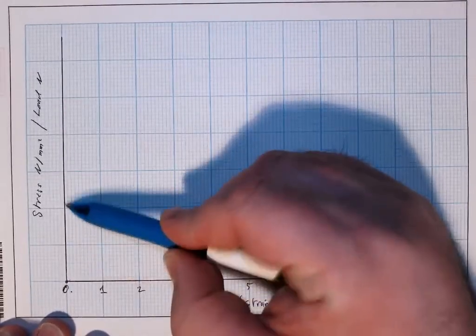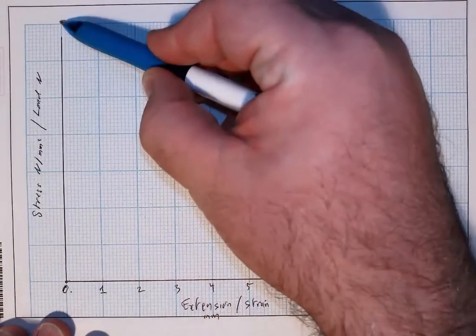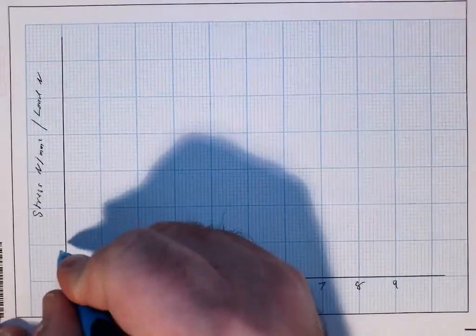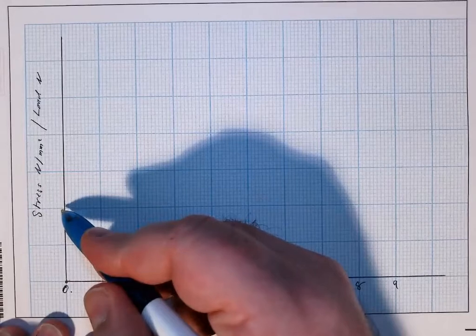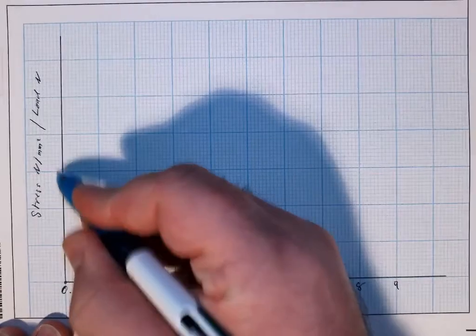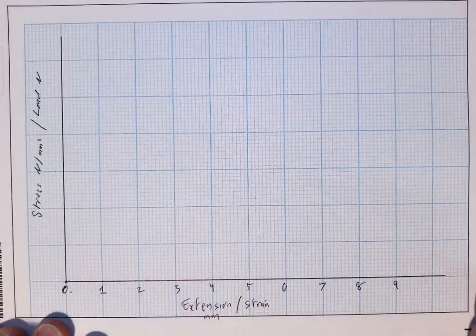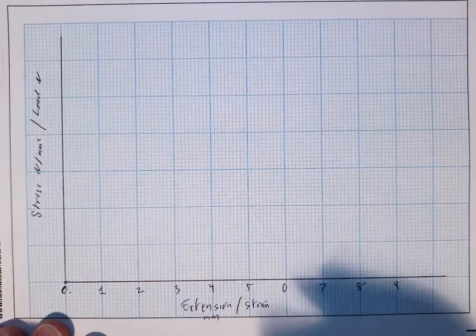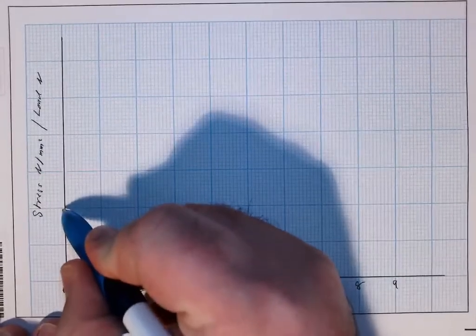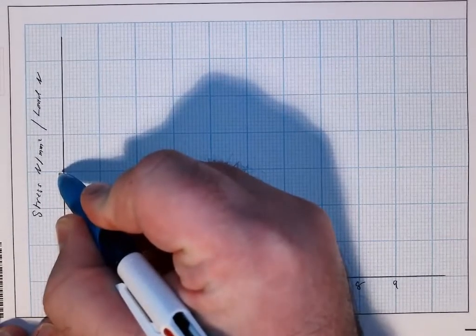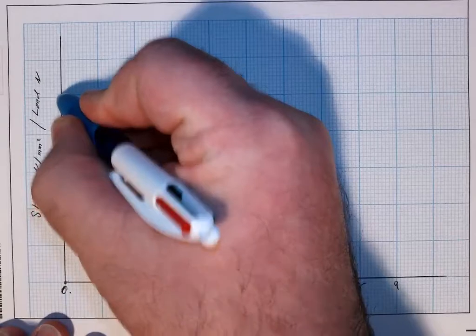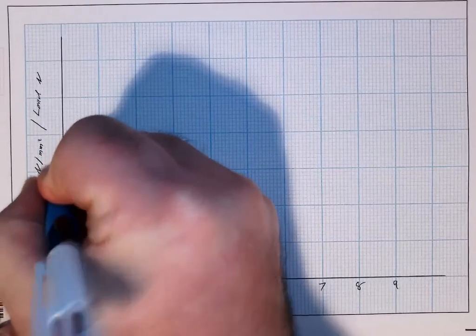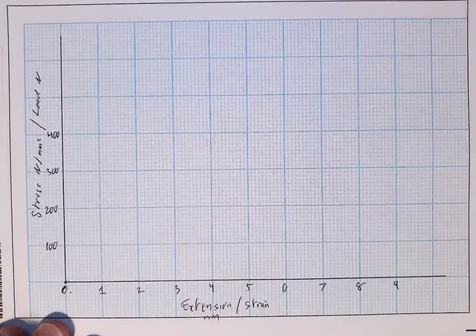Now for the stress we're going up as far as 352. So we have a couple of different options and it's usually a good idea to plan this beforehand. I could go 50, 100, 150, 200, 250, 300, 350, but I need 352 so that's not going to work. I might go 75, 150, 225, 300, 375 for example. But we'll keep it simple. We'll go 100, 200, 300, 400.